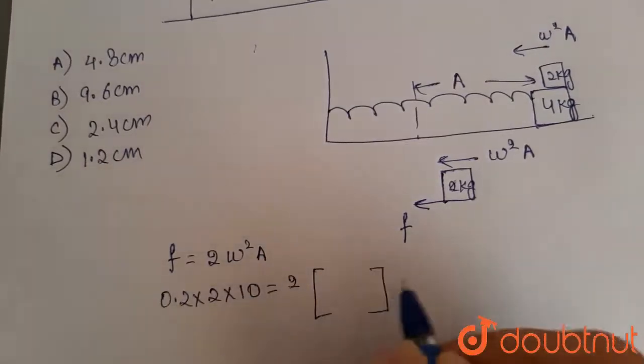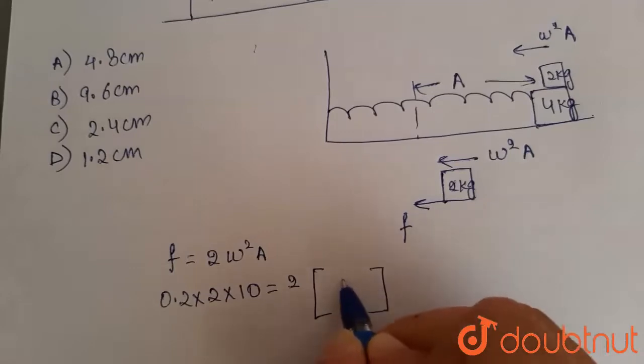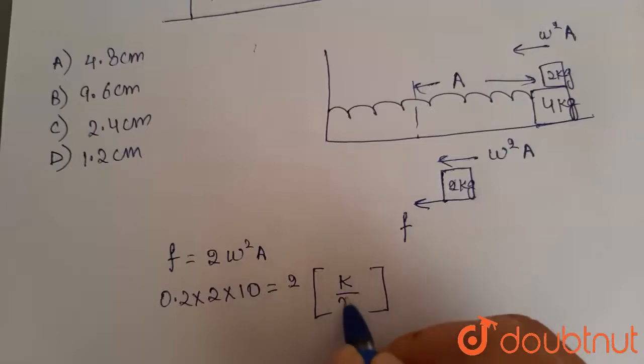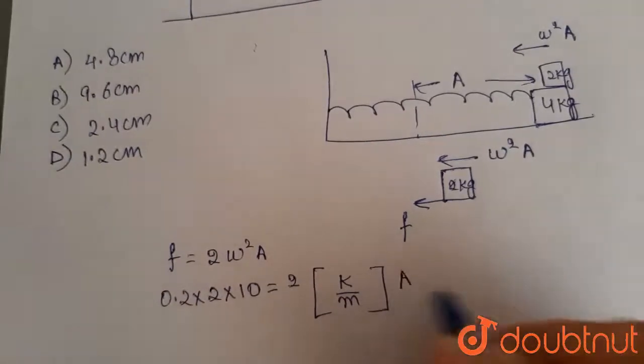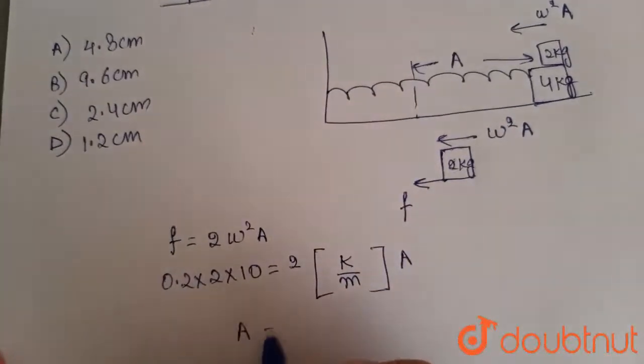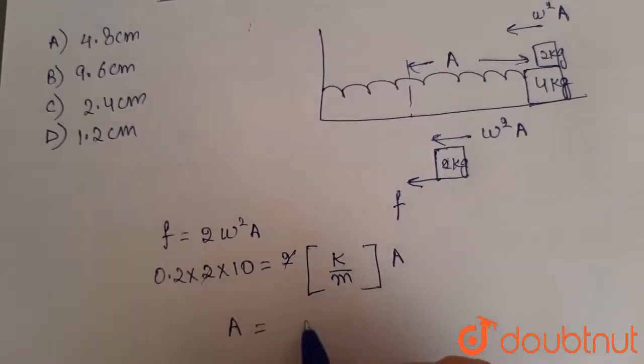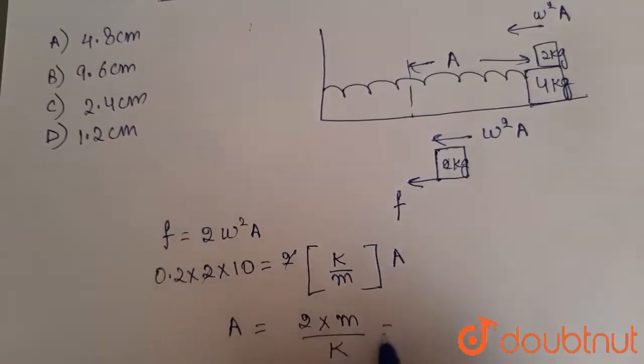Now omega square can be written as K by M which is equal to A. So amplitude turns out to be, this 2 gets cancelled out. So amplitude turns out to be 2 into M divided by K, which is equal to,